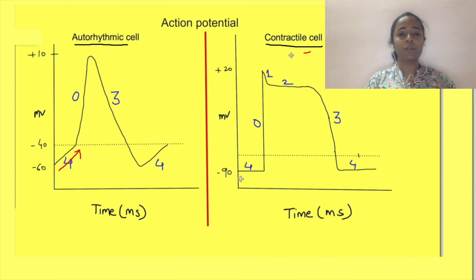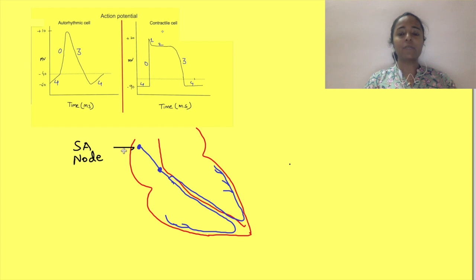On the contrary, in contractile cells, this phase 4 is seen as a straight line at minus 90 mV. This is resting membrane potential of contractile cells and it is stable. Only when the electrical activity from pacemaker cells travels via gap junctions to the contractile cells, the action potential is generated in the contractile cell.